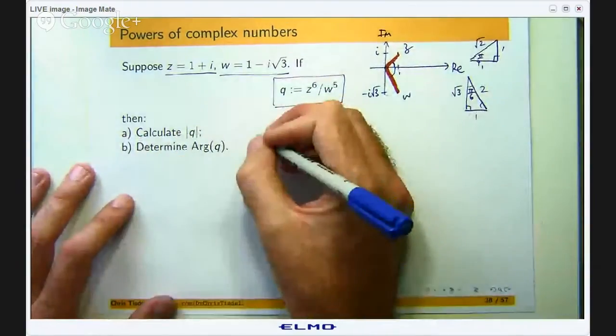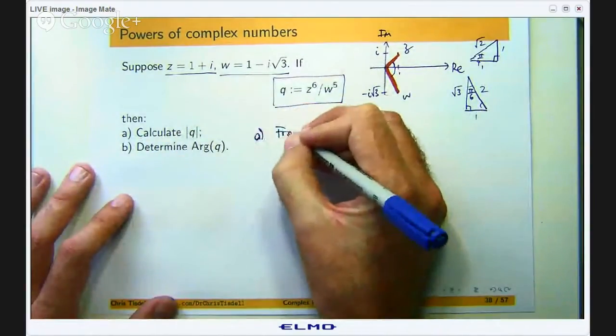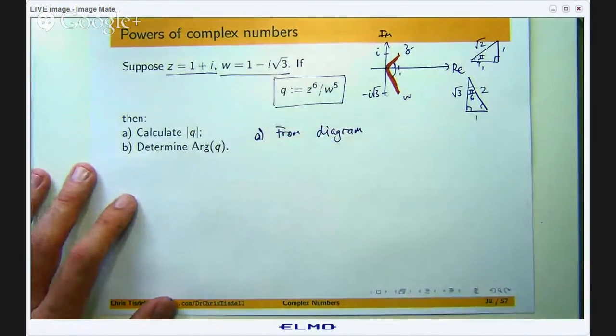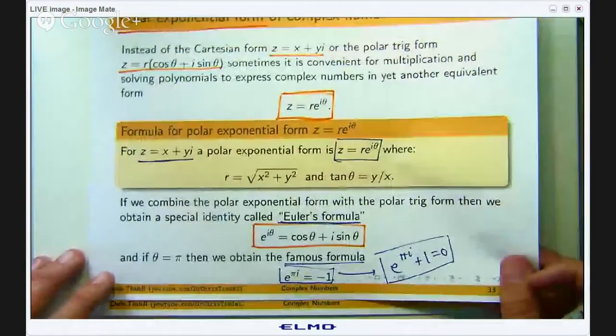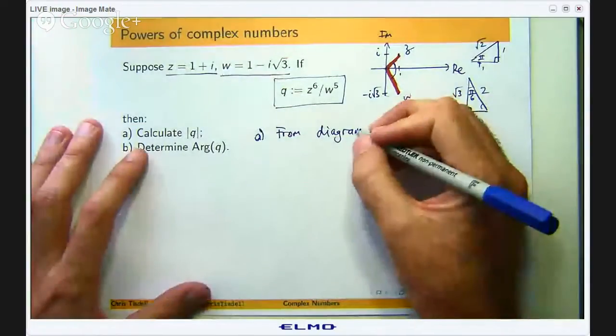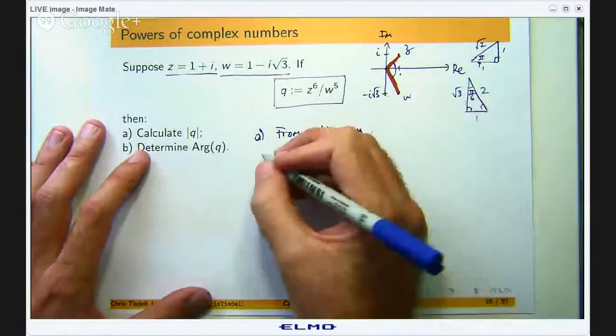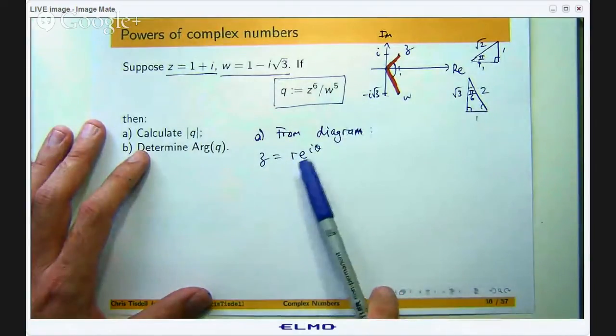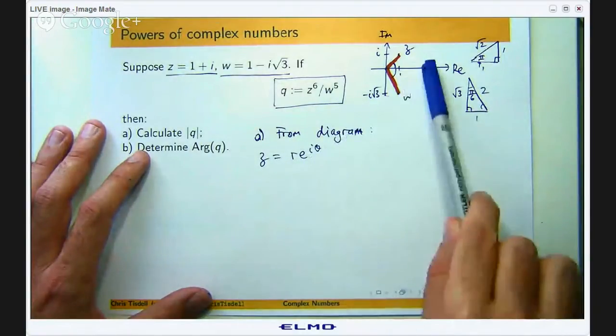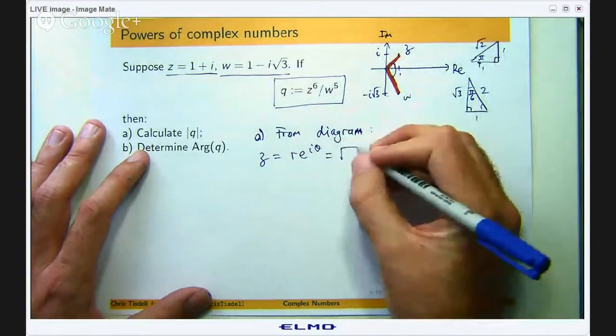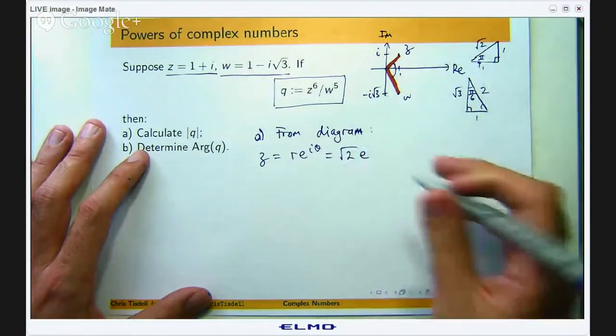Let me write some of these things down. From our diagram, I always like to draw diagrams when possible because it gives you a simple visual way to interpret things. z equals r e to the iθ where r is the modulus or the length and θ is an angle to the positive real axis. So here we are going to have √2 and the angle is π on 4.